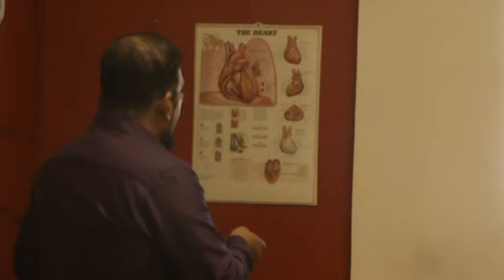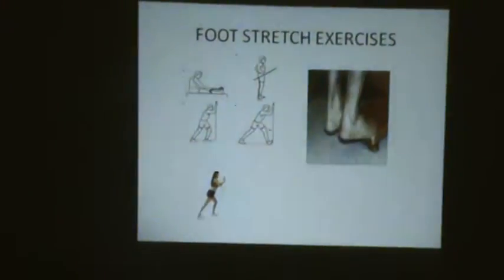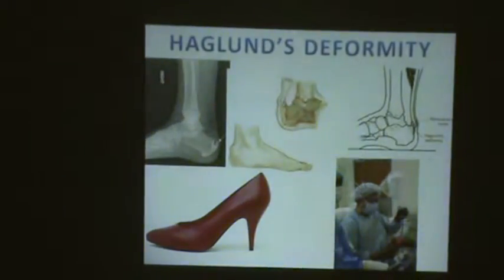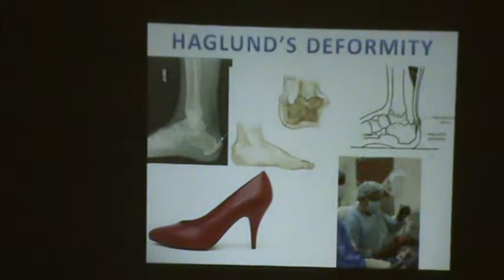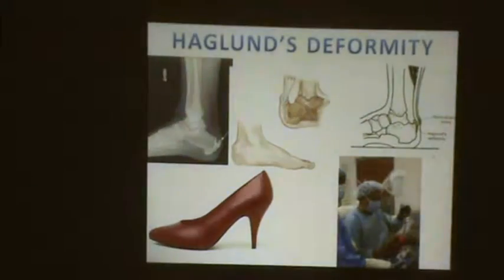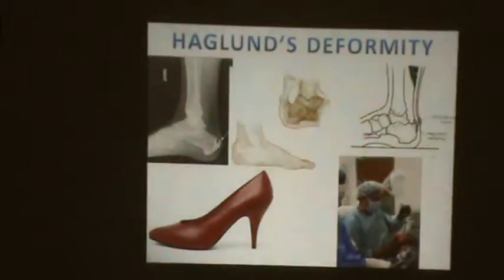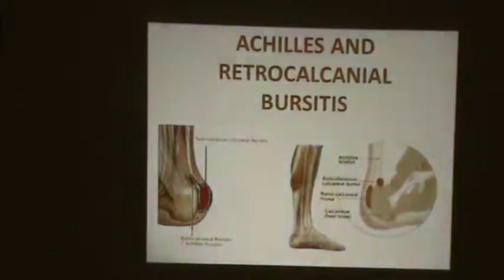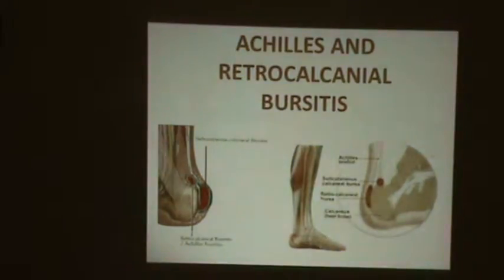The second cause is when a spur of bone grows in that area — this is known as Haglund's deformity, named after the person who first described it. A spur of bone can grow on either side. When there is pain at the back of the heel and you see swelling over the Achilles tendon area, that is retro-Achilles bursitis. To test for it, pinch the Achilles tendon firmly with thumb and finger — if the patient feels pain, we know the bursa is inflamed.